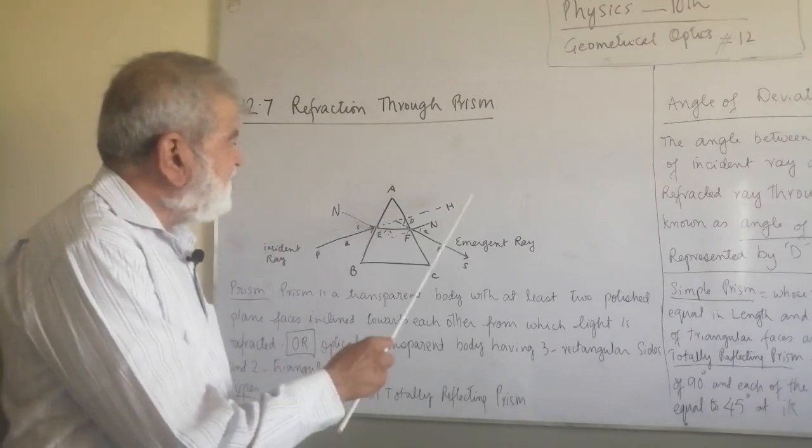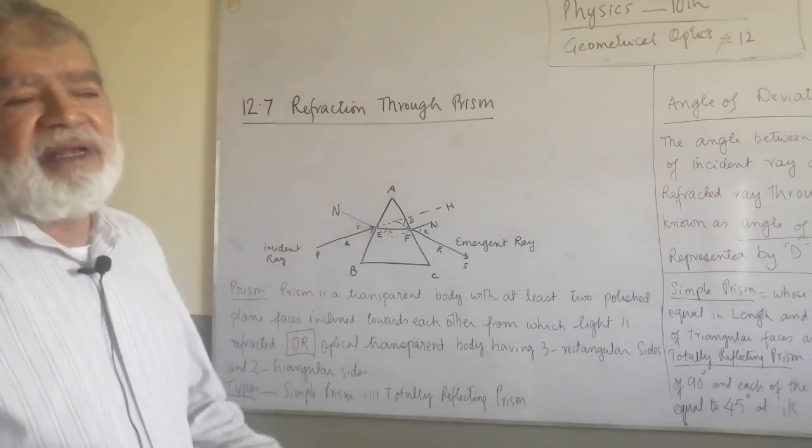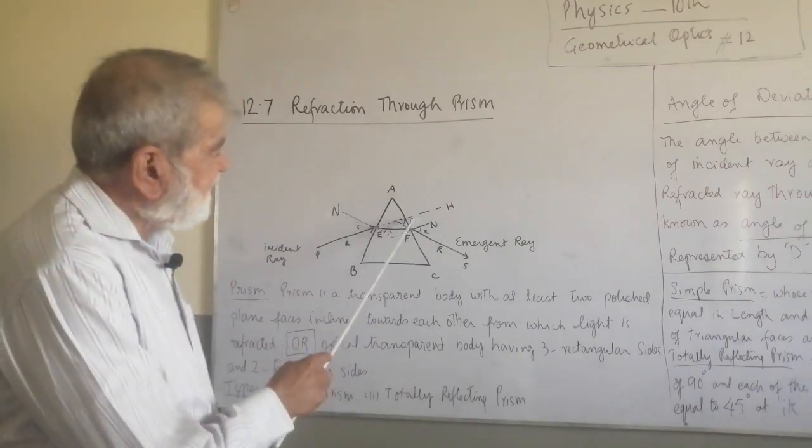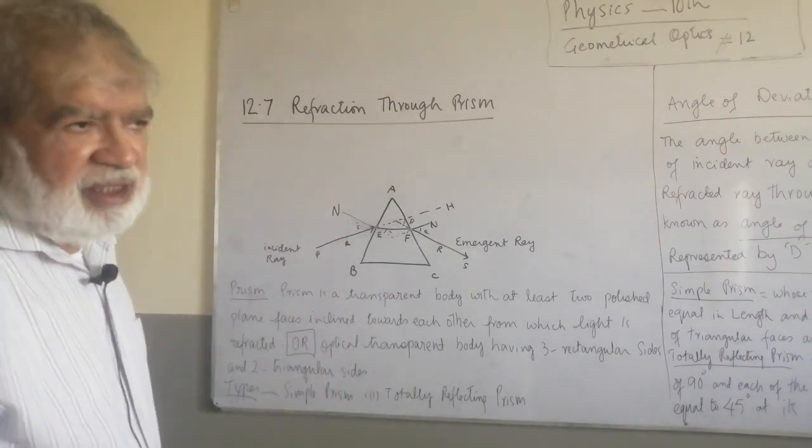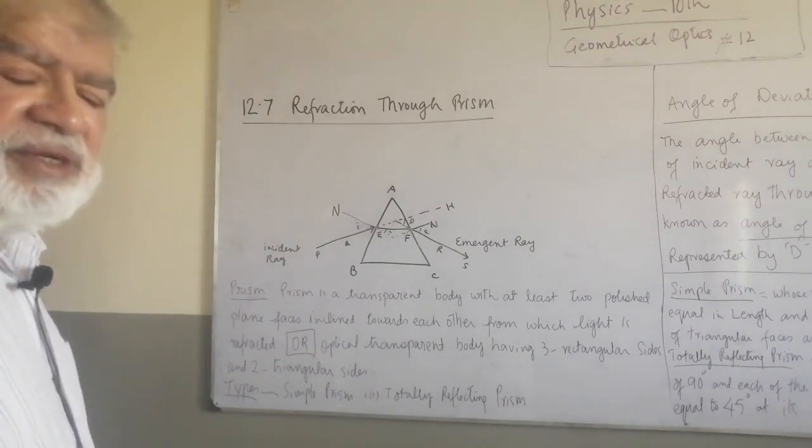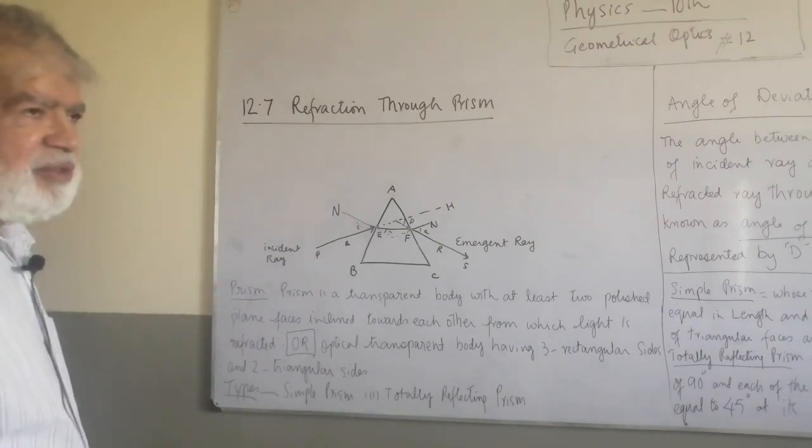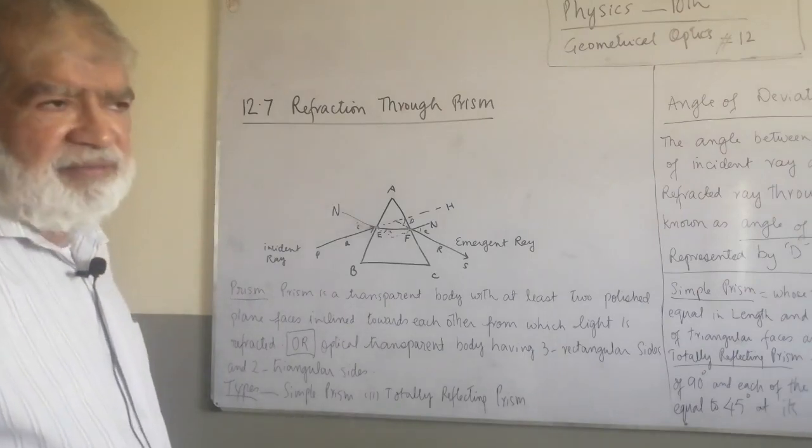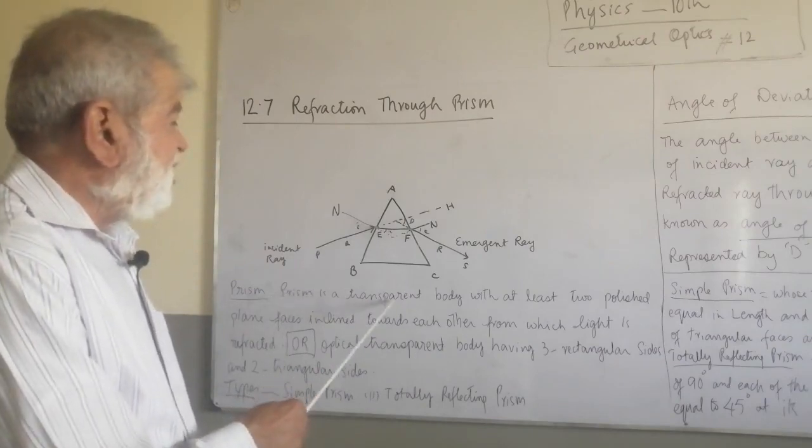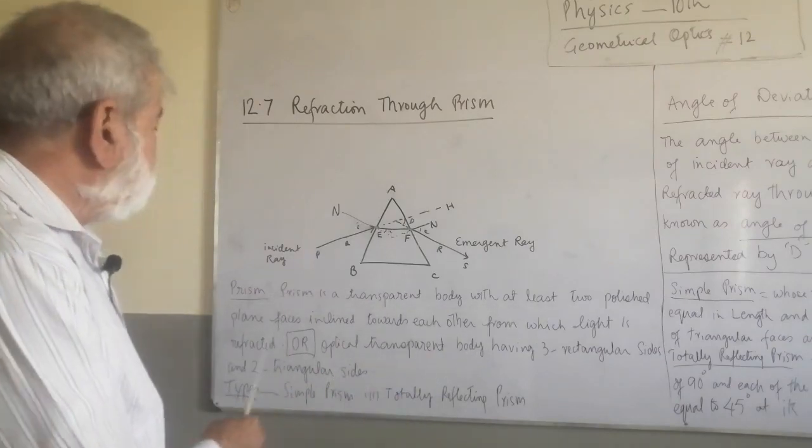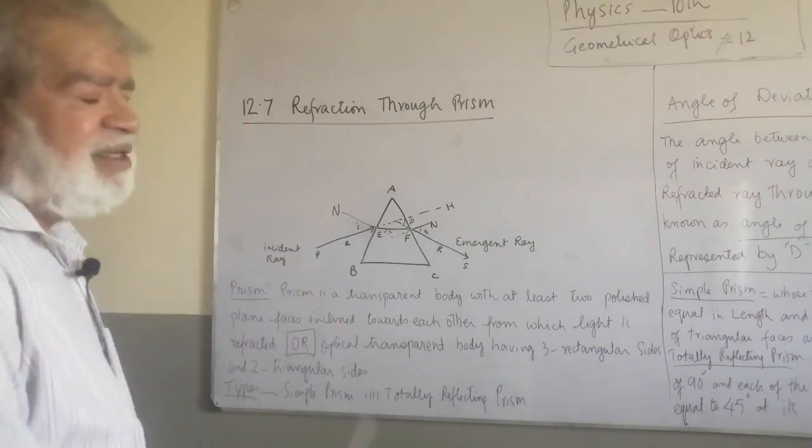Now, there are a few terms that you must remember and you must learn them by heart. One is, what is a prism? As I told you before, a prism is a transparent body. A prism is a transparent body with at least two polished plain surfaces inclined towards each other from which light is refracted.